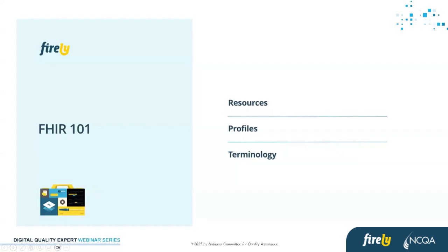The basics of FHIR is that it's built by resources. A resource is just a modular unit of health data — that would be administrative resources like a patient, what location they're in, the practitioner taking care of them. It could be clinical content too, like procedures that have been performed, conditions and allergies a patient has, and medications. These different resources make up what a patient is and how they're taken care of — we call that a patient compartment.